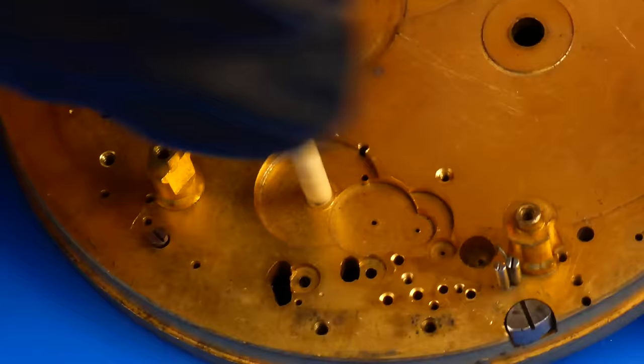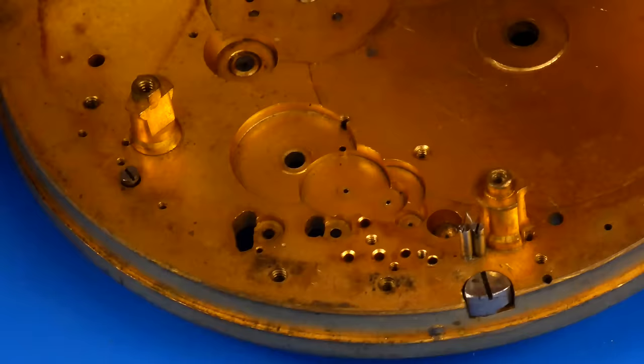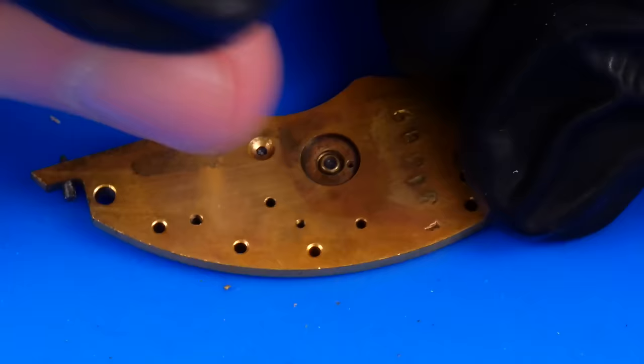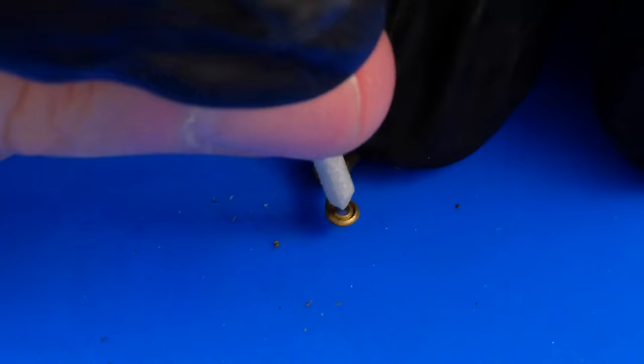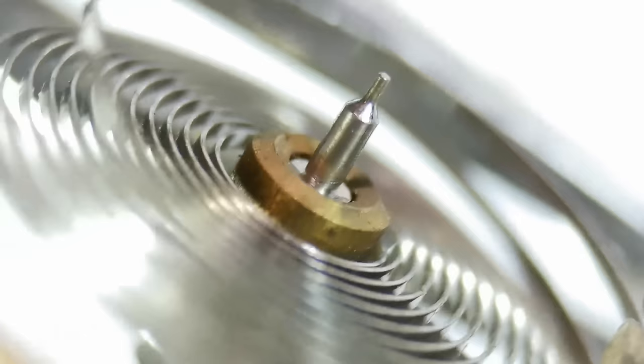To pre-clean the movement, I take some time to scrub the insides of the jewel holes with a piece of pegwood. This is an important step since it maximizes the effectiveness of the time spent in the cleaning machine and helps to minimize the contamination of the cleaning solution.